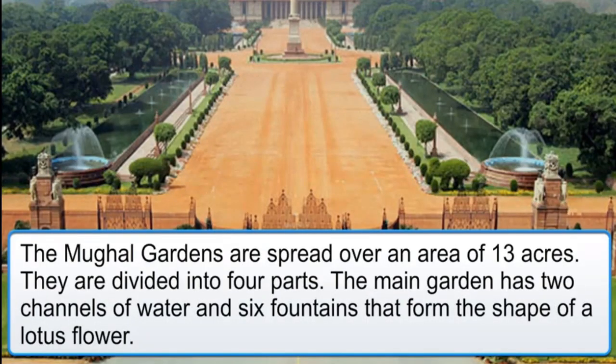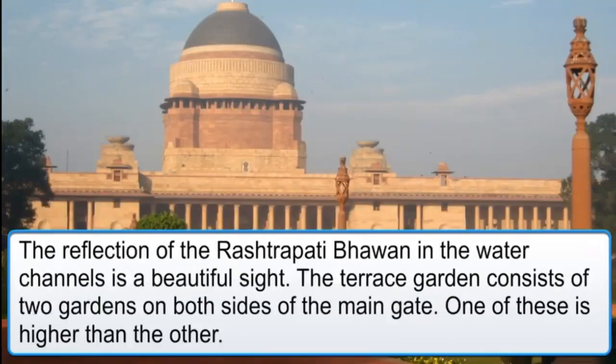The Mughal Gardens are spread over an area of 13 acres and are divided into four parts. The main garden has two channels of water and six fountains that form the shape of a lotus flower. The reflection of the Rashtrapati Bhavan in the water channels is a beautiful sight.